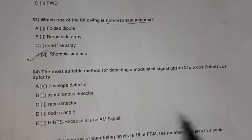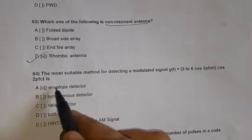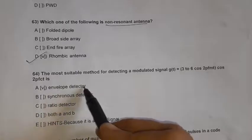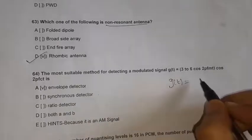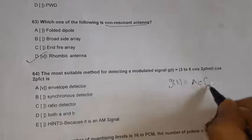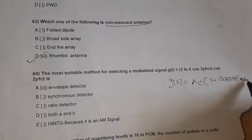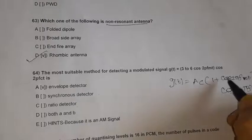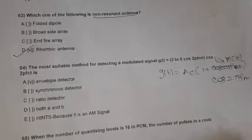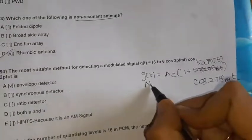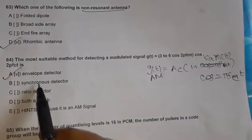Question 64: The most suitable method for detecting a modulated signal G(t) equals 326 cos(2 pi FM t) cos(2 pi FC t). This matches the general conventional AM standardized equation: AC into (1 plus cos(2 pi FM t)) into cos(2 pi FC t). For AM, we use the envelope detector.